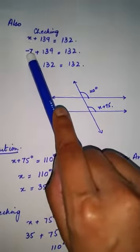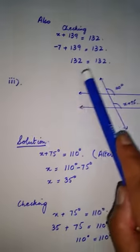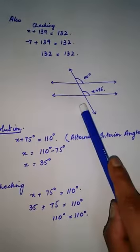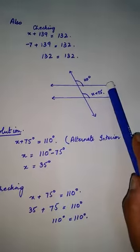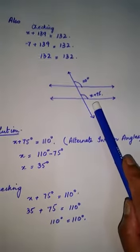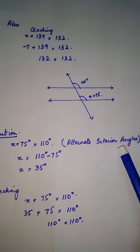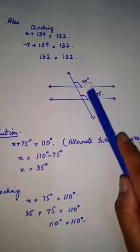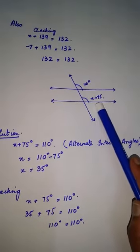which was -7, and the answer will be 132. Next, question part 3 is again two parallel lines, and the angles given here are alternate interior angles: 110 degrees and the angle x + 75 degrees.